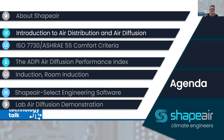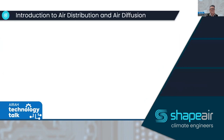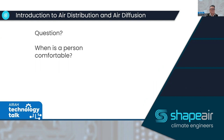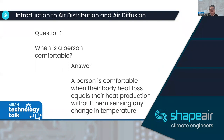Moving on to the introduction to air distribution and air diffusion. The first question is: when is a person comfortable? A person is comfortable when their body heat loss equals their heat production without them sensing any change in temperature.